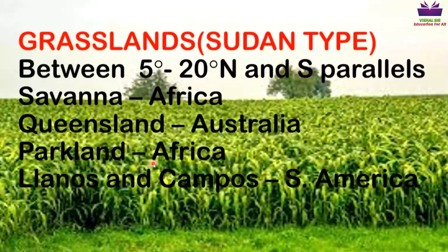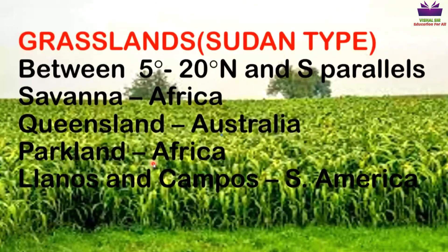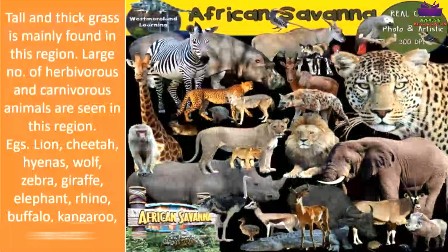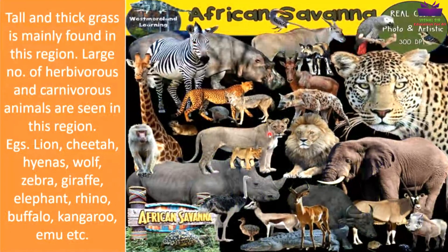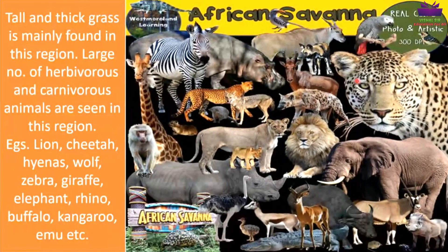Tall and thick grasses are mainly found in this region due to rainfall and sunlight. A large number of herbivores and carnivorous animals are seen here. Nature has gifted these animals with speedy legs, and their skin has colorful spots, stripes, or bands to protect them from hunters.